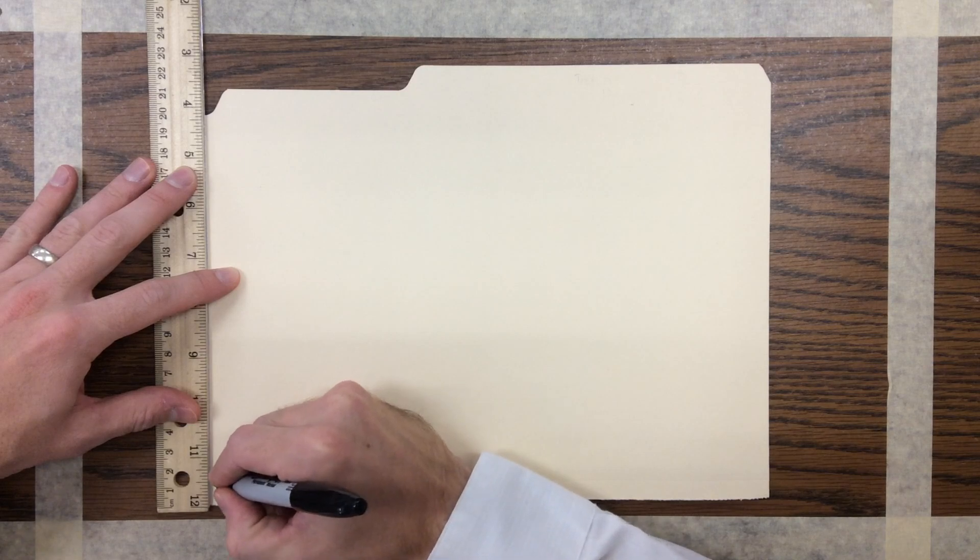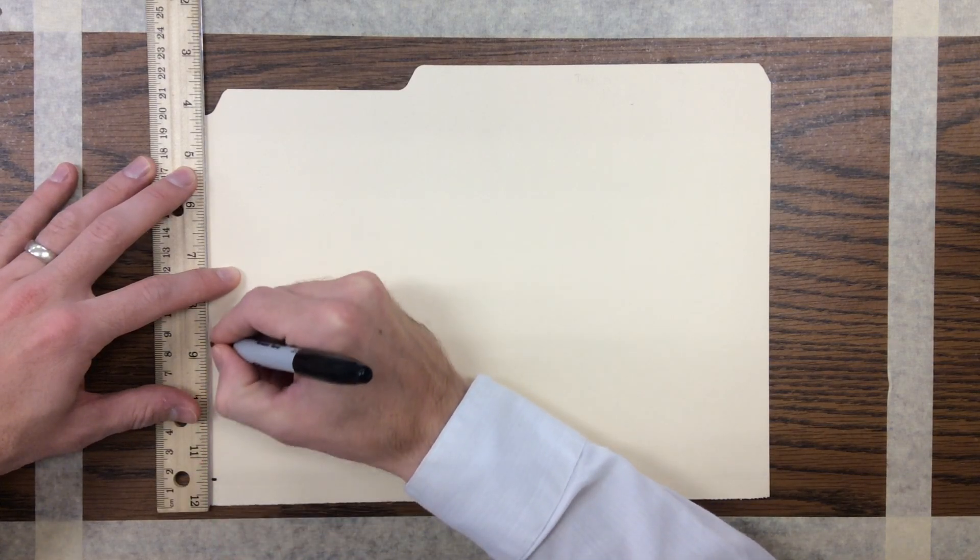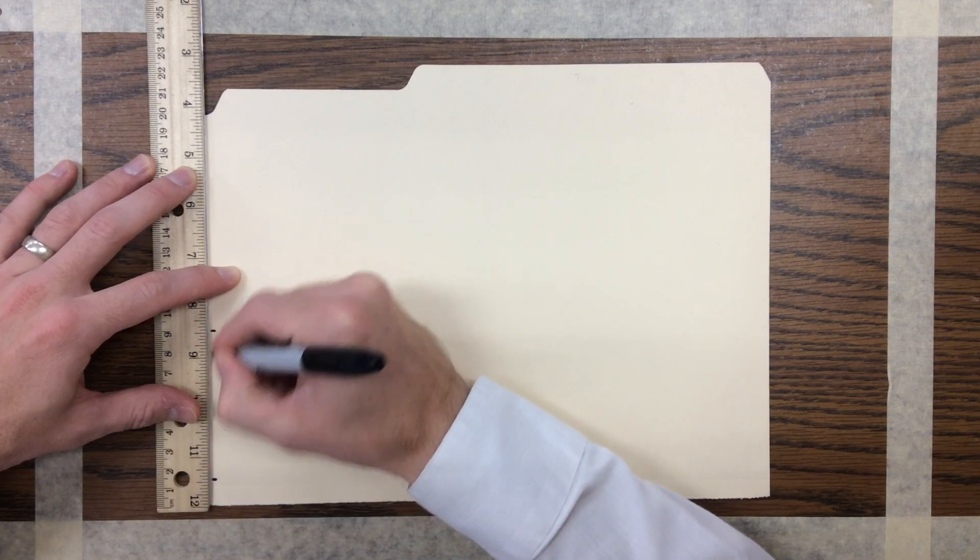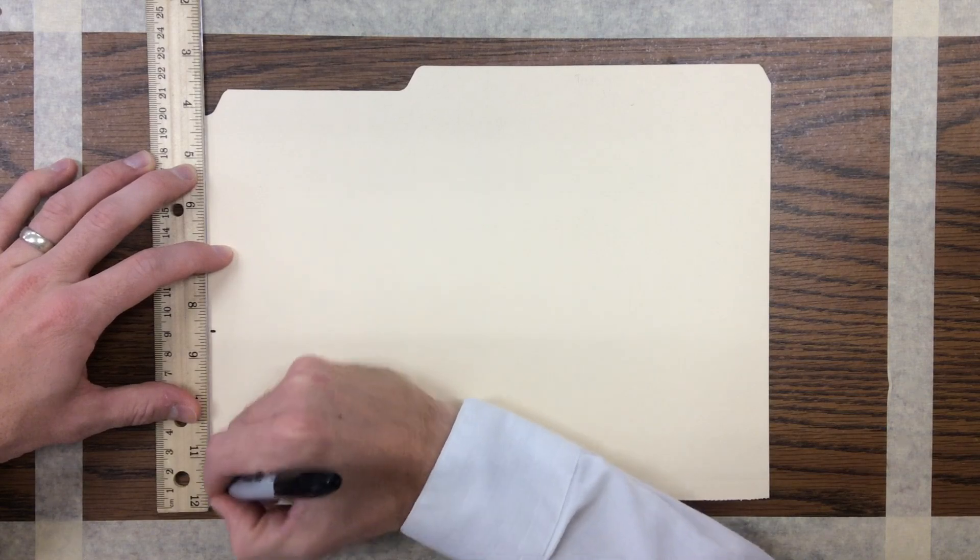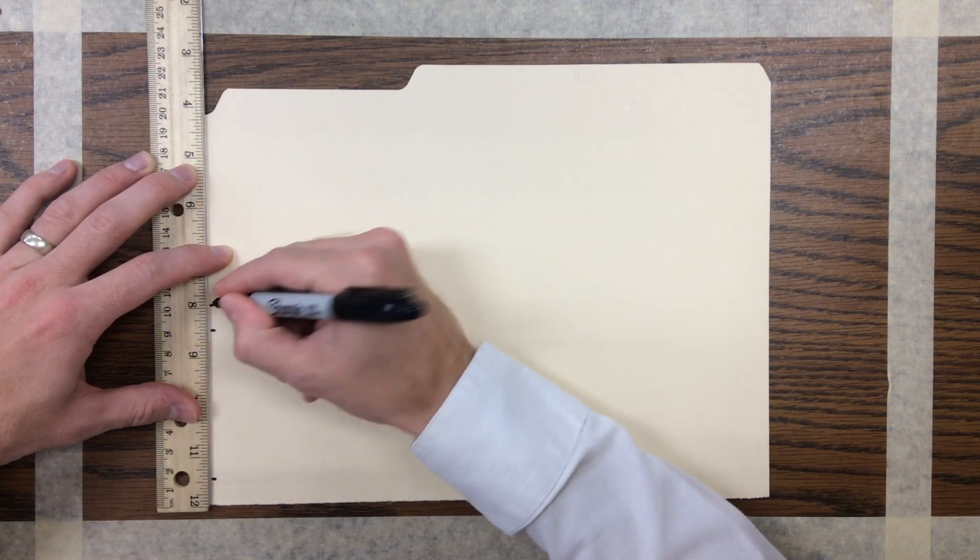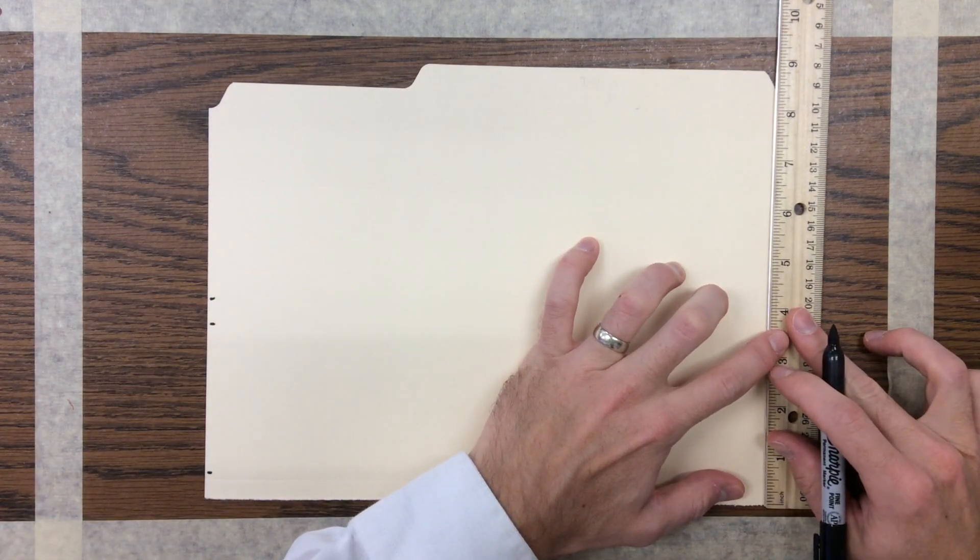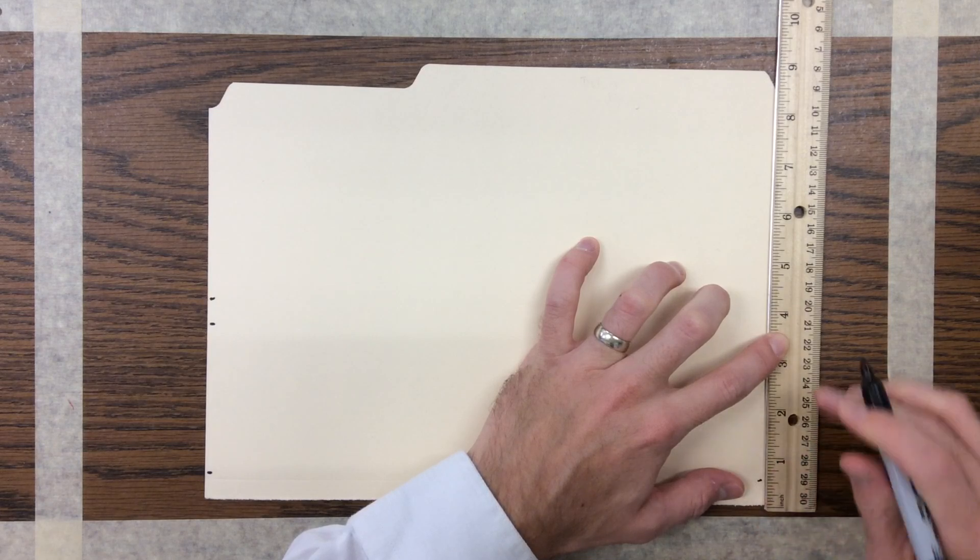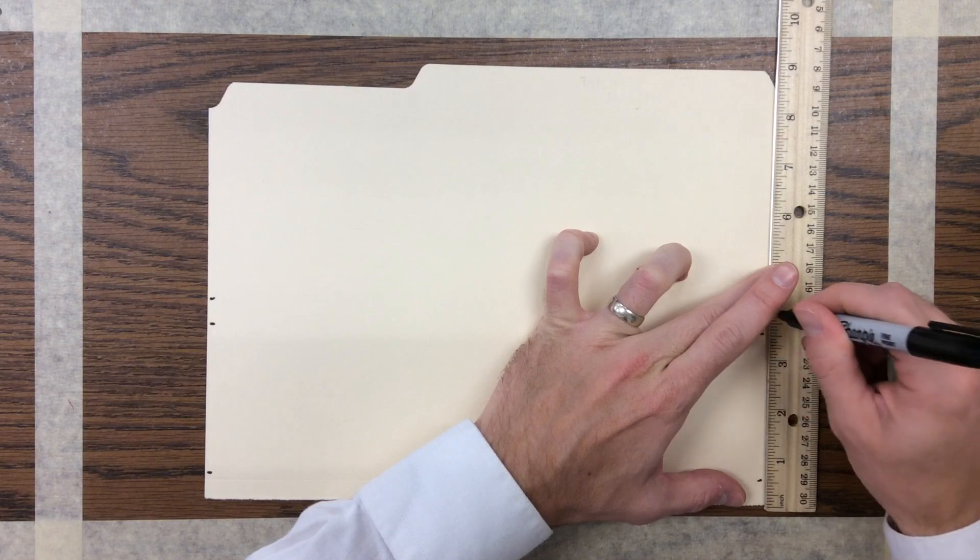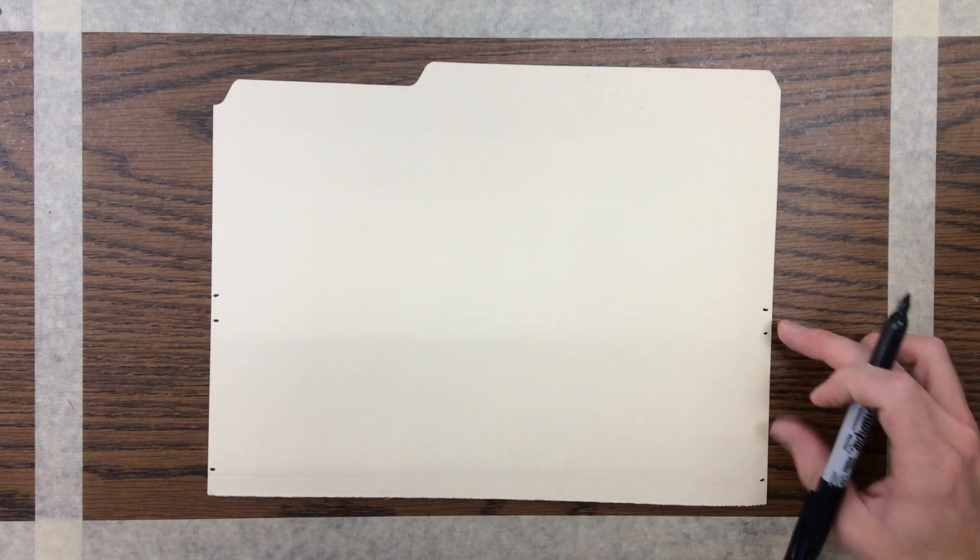I'm going to start here at the bottom and measure up a half inch, then three inches from that dot or three and a half inches from the very bottom, and then a half inch up from that or four inches total from the very bottom. Same thing on the other side: half inch up, three inches up from that, and then another half inch up from that point.